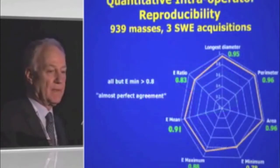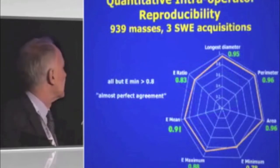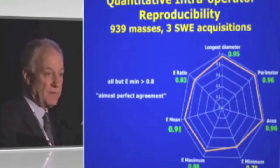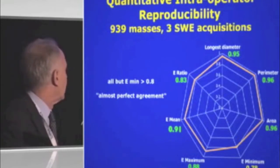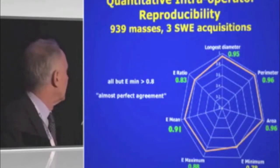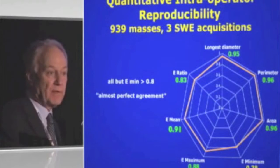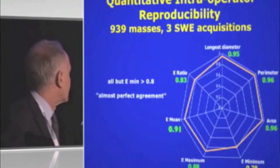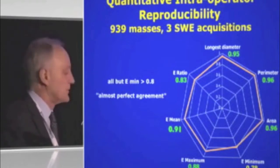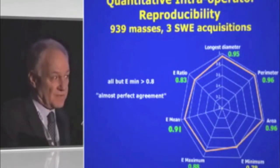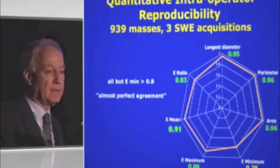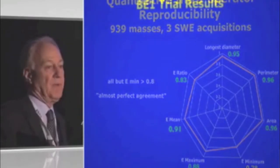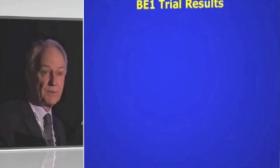This spider web chart shows the quantitative reproducibility results. All values, except E minimum, were above 0.8—one being a perfect value—which on the Landis and Cox scale means almost perfect agreement. These results indicate this is an extremely reliable technique and, by implication, easy for the user to perform.